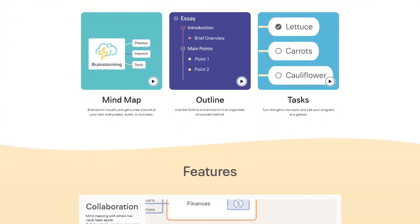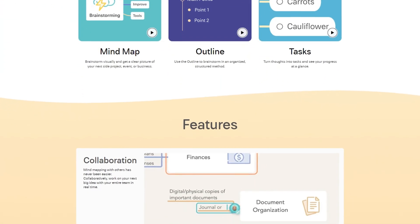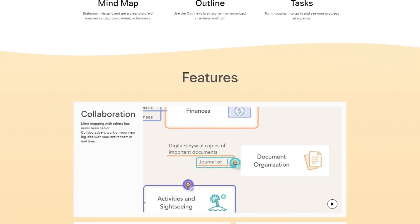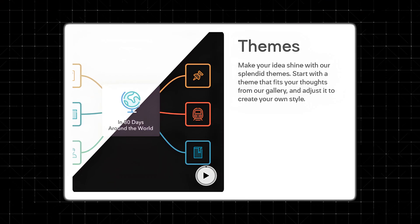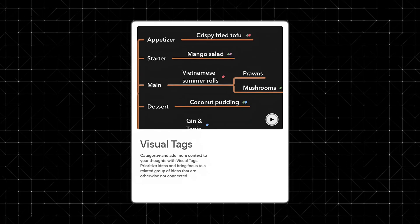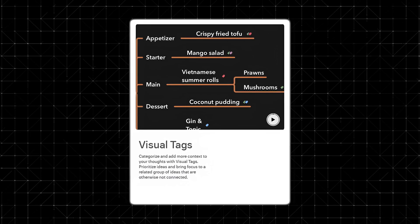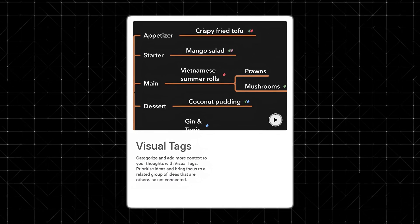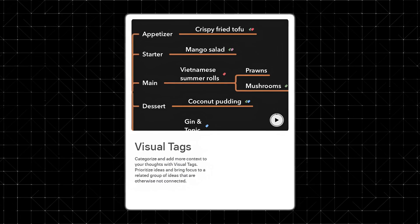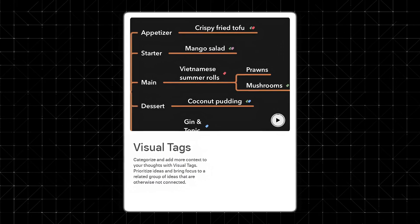Styling and customization. Let's talk about making your mind maps look great. MindNode understands that a messy mind map can feel overwhelming, so they've included plenty of options to help you organize and beautify your work. You can color code nodes to represent different categories, apply themes for a polished look, and even add visual tags for quick context. These visual tags are especially handy when dealing with large, complex maps, because they act like sticky notes, drawing your attention to what matters most.